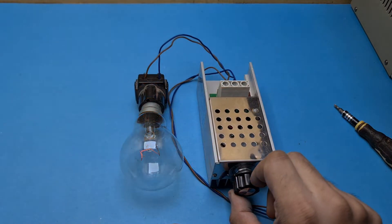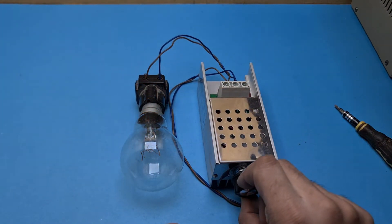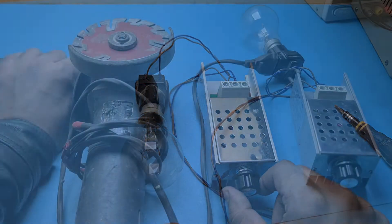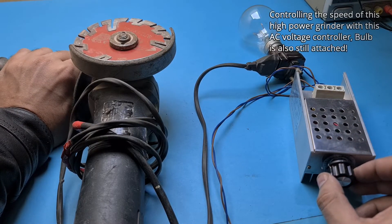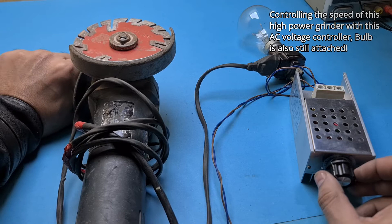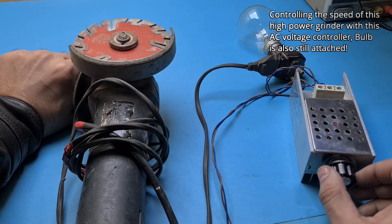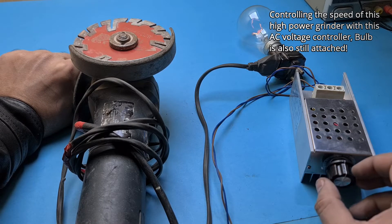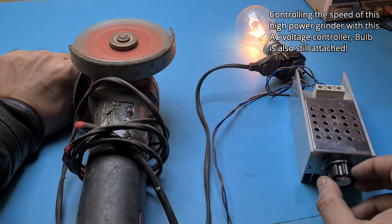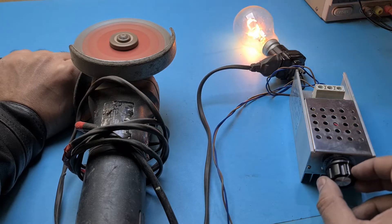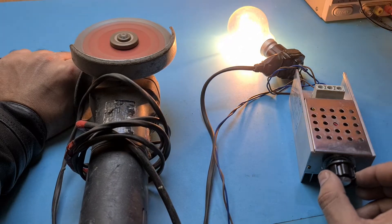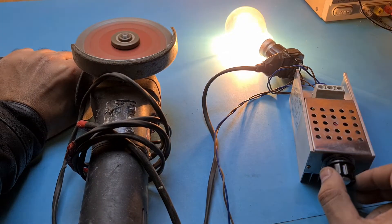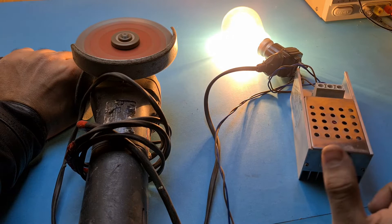Let's attach something bigger with this controller and see if it can handle it. I will slowly turn the knob. There it goes. As you can see, I can increase the speed of this grinder here. It is full now.